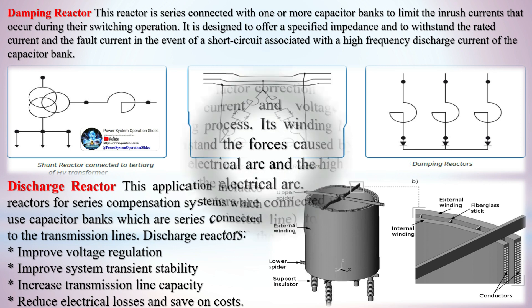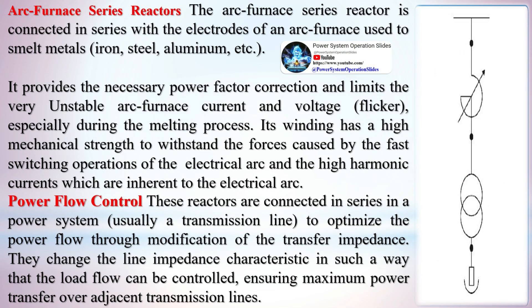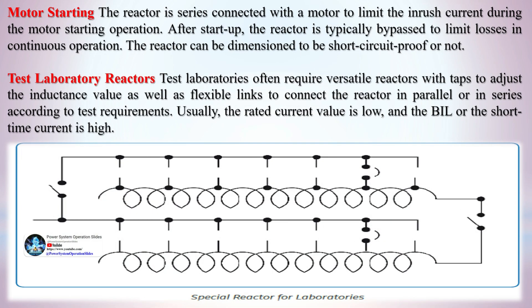Arc furnace series reactors: the arc furnace series reactor is connected in series with the electrodes of an arc furnace used to smelt metals — iron, steel, aluminum, etc. It provides the necessary power factor correction and limits the very unstable arc furnace current and voltage flicker, especially during the melting process. Its winding has high mechanical strength to withstand forces caused by fast switching operations of the electrical arc and the high harmonic currents inherent to the electrical arc.